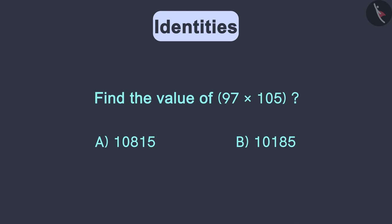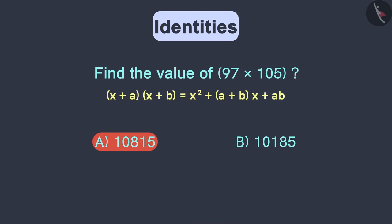Let us see why we get option A as the answer. Focus on the given question. We have seen how to solve such examples using this identity.